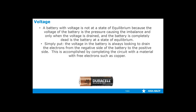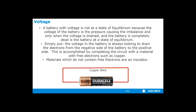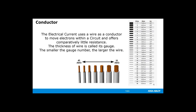Simply put, the voltage in the battery is always looking to drain the electrons from the negative side of the battery to the positive side. This is accomplished by creating a circuit, so the electrons can travel from the negative side to the positive side. Materials that do not contain many free electrons are called insulators. A circuit uses wire as a conductor to move electrons within a circuit and offers very little resistance. The thickness of the wire is called the gauge — the smaller the gauge number, the larger the wire. Copper and aluminum are the most common materials used for conductors. Gold is used where corrosion resistance is required.